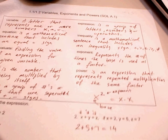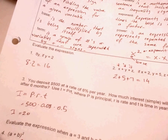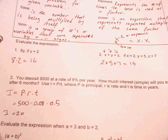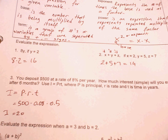Sometimes instead of evaluating expressions, we find the value for an equation. In this word problem, a person deposited $500 at a rate of 8% per year. How much simple interest will this person earn after 6 months? We use the formula i equals p times r times t, where p is principal, r is rate, and t is time in years.